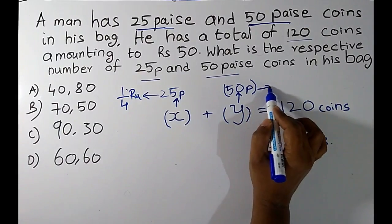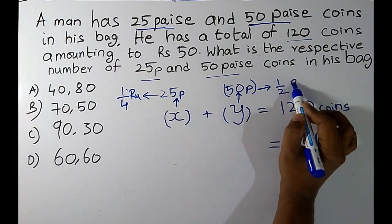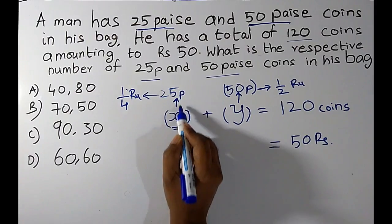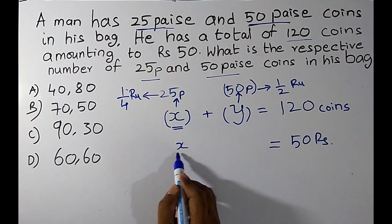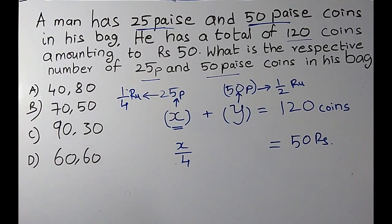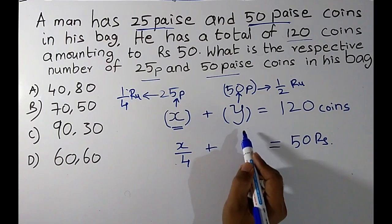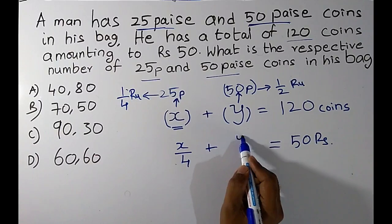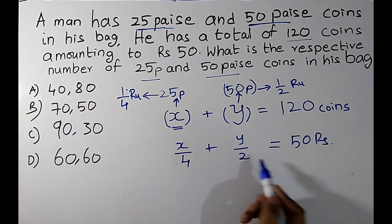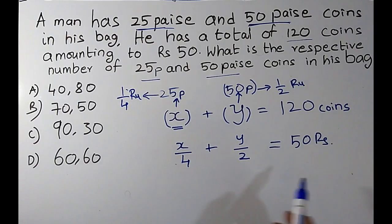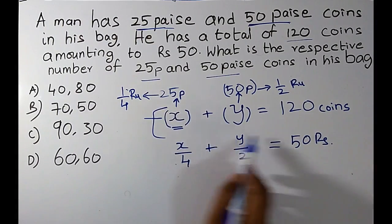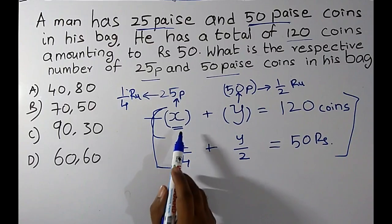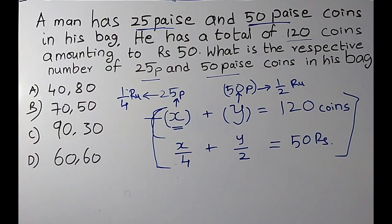25 paise can also be written as 1/4 rupee, and 50 paise can also be written as half rupee. If there are X coins of 25 paise, their value is X/4 rupees. If there are Y coins of 50 paise, their value is Y/2 rupees. These are the two equations we are going to solve to get the values of X and Y.